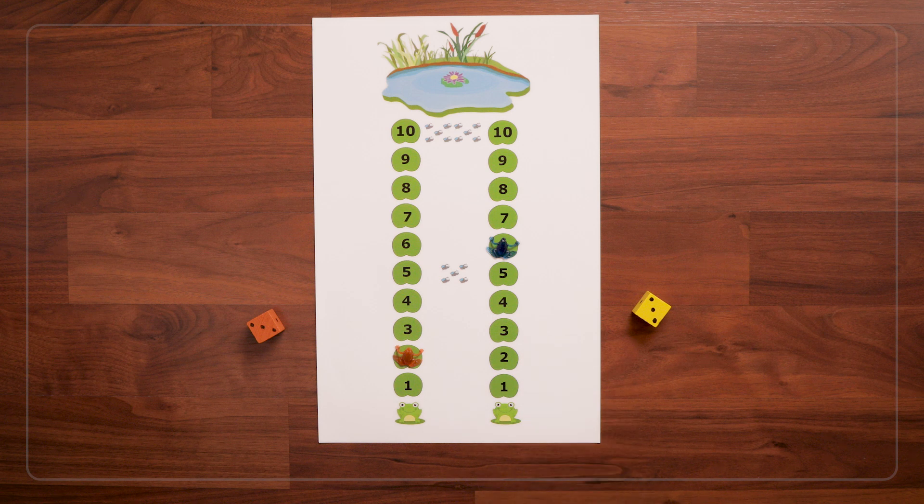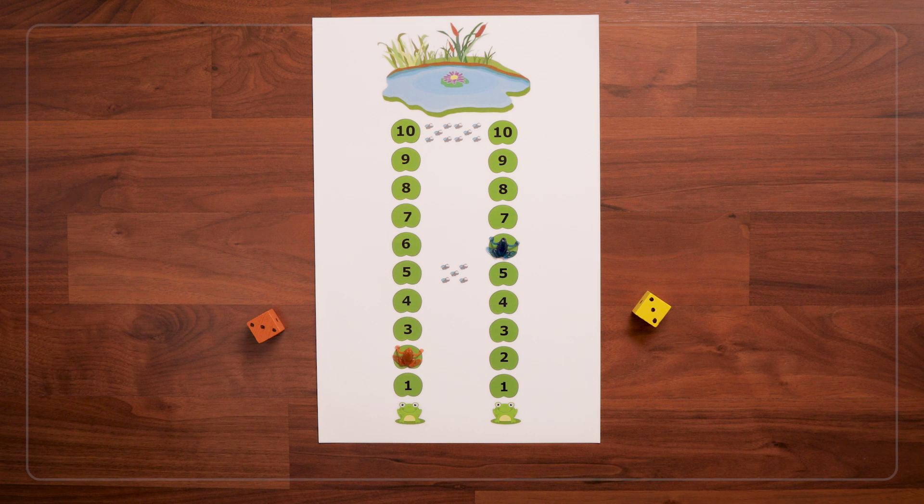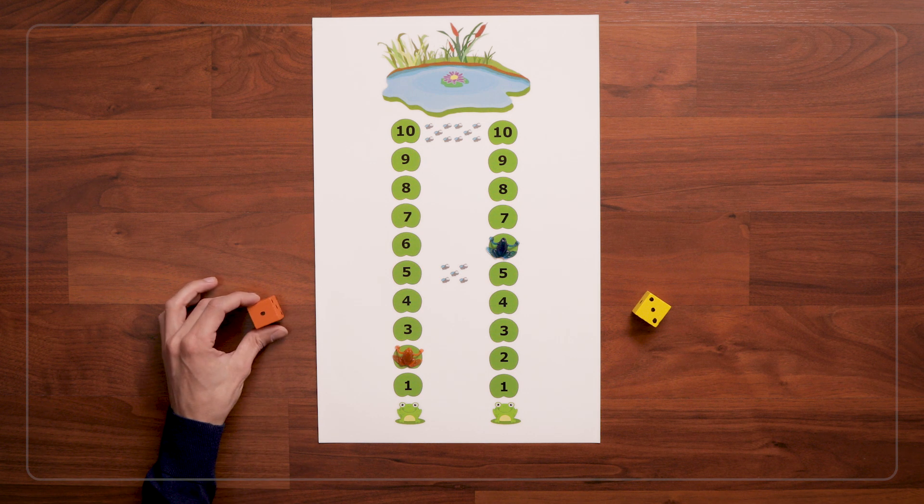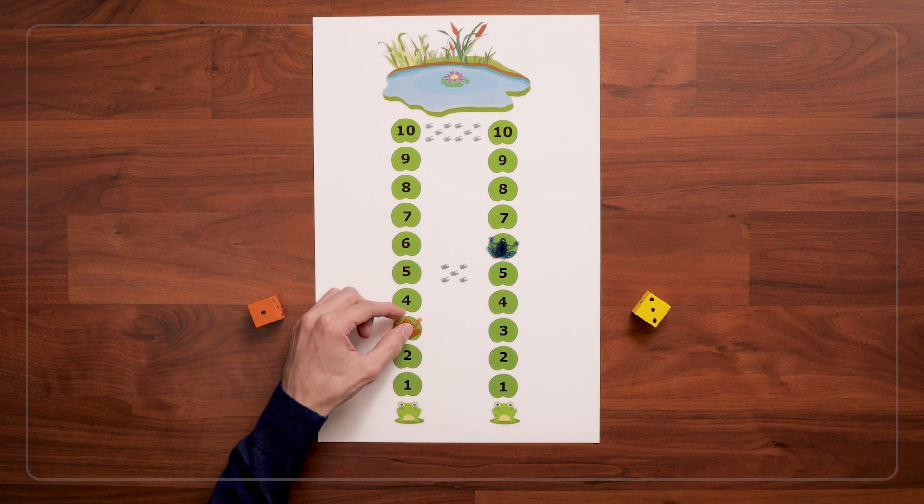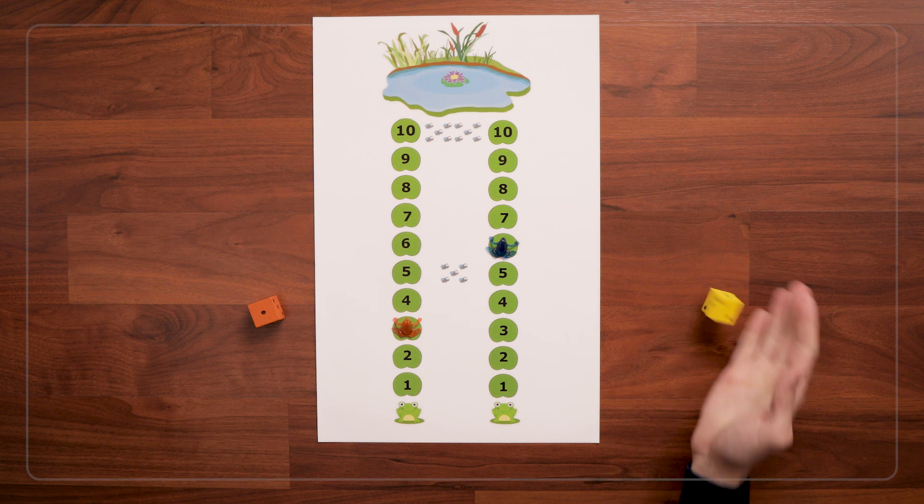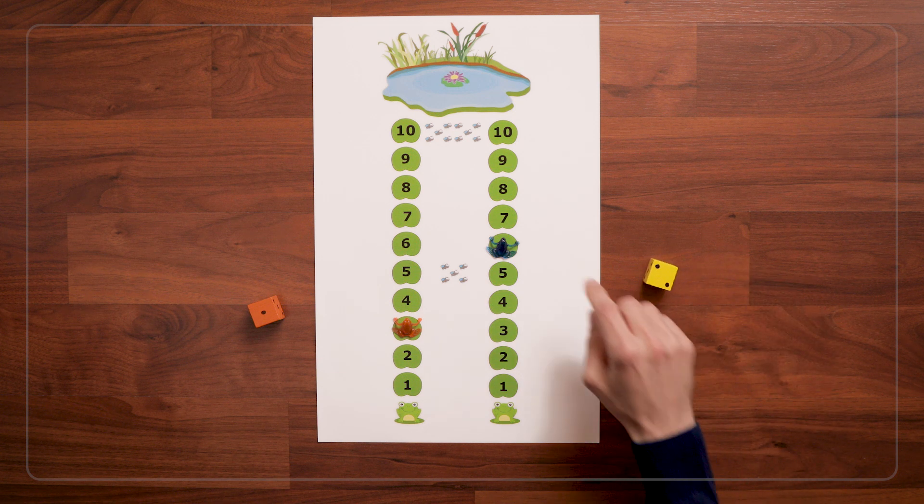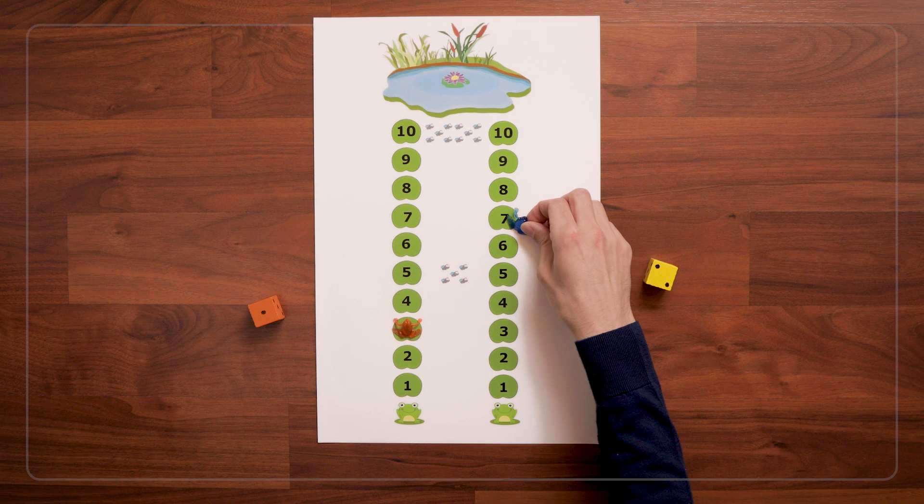And studies have shown that this type of number path practice really improves kids' understanding of number magnitude. Meaning how far apart the numbers are from each other. So my friend here rolls a 1. And instead of saying 1, she says 3. Because she's hopping forward to that 3. And then I go again and get a 2. And I'm going to say 7, 8.